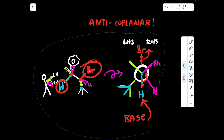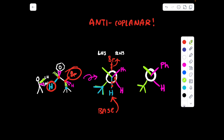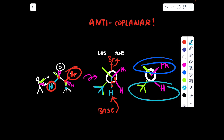To determine if we are going to get the cis or the trans product, we need to keep the Newman projection as is. Draw the same Newman projection but without the H that we extracted and without the leaving group. We have a methyl group, a phenyl group, a hydrogen, and a tert-butyl group. The two top groups are going to be on the same side, and the two bottom groups are going to be on the same side. Draw a double bond between carbon 1 and carbon 2, then draw the groups in the exact same orientation that you see them in the Newman projection.